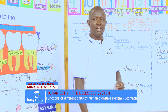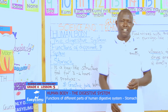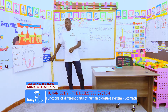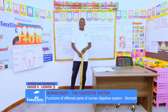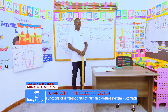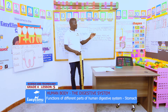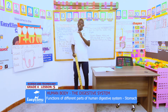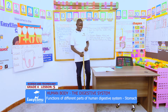And today we'll look at the stomach. In our previous lesson, we saw how food flows down from the mouth through the esophagus and reaches the stomach. Now, what happens when the food reaches the stomach?